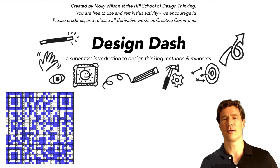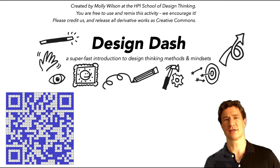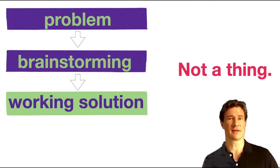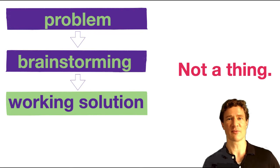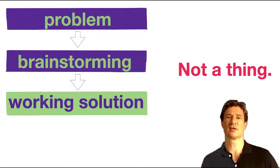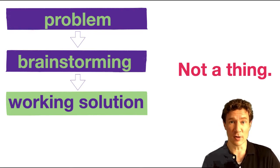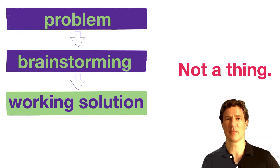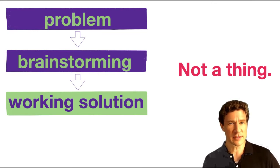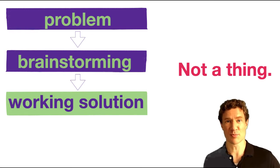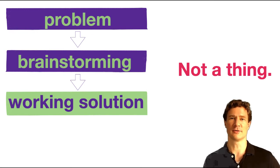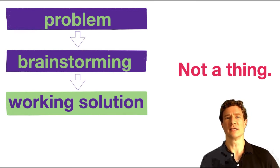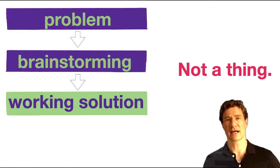Before we get into that, I want to talk a little bit about misconceptions around design. A lot of people think that the way design works is somebody thinks of a problem, sits in a dark room and comes up with a bunch of solutions all on their own, and then builds the solution and it works perfectly. This is not how it works. Most of the time, design requires a lot of iteration, a lot of trial and error. Anybody who tells you that something was invented just by sheer inspiration probably isn't telling you the whole story. So we're going to go through a deliberate design process to learn a little bit about how this can actually be done.